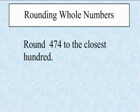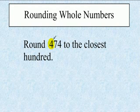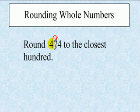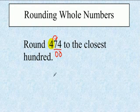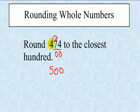Let's review how to round whole numbers. Round 474 to the closest hundred. You want to round to the nearest hundred — ones, tens, hundreds. This is the hundreds place. The poem says look right next door. If it's four or less, ignore it and it stays four. If it's five or more, add one more. Here the digit is five, so we add one more, and all numbers after the place value become zeros. Because this is five or more, our four changes to a five. So 474 becomes 500, rounded to the nearest hundred.